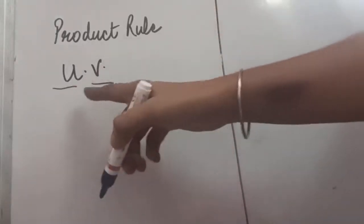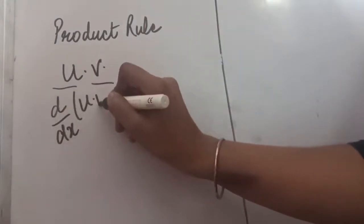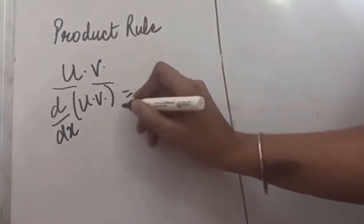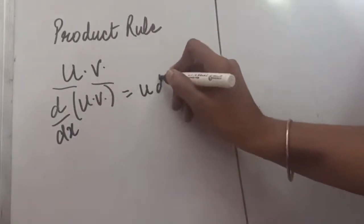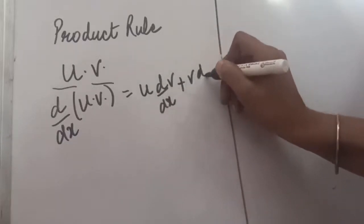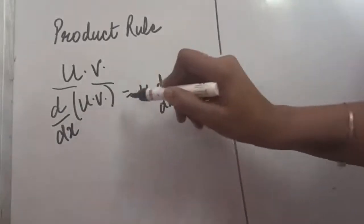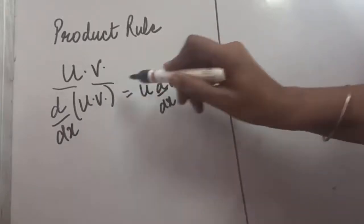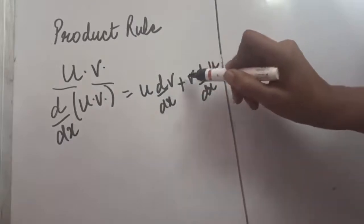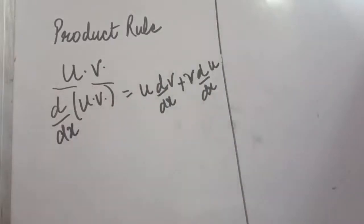Let us start with two functions. If u and v are two functions and we have to take the differentiation of u·v, the formula of the product rule is: the first function multiplied by the differentiation of the second function, plus the second function multiplied by the differentiation of the first function. Keep the first function outside and take the differentiation of the second, then keep v outside and take the differentiation of u.